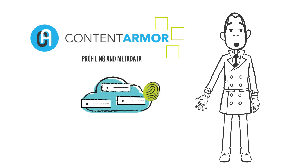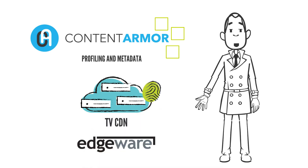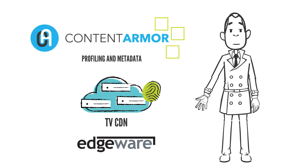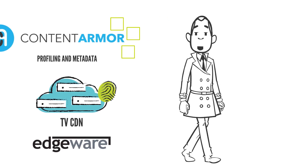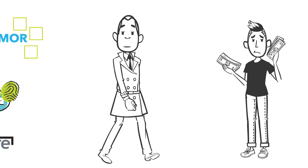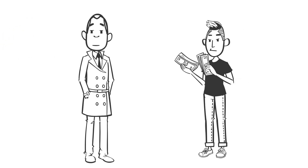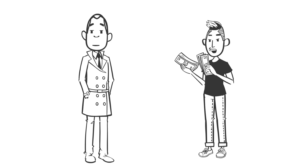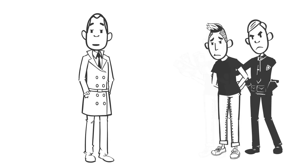Edgeware's TV CDN uses the metadata to embed a unique watermark for each stream on the fly and correlates the watermark with the viewer. Now you can protect your valuable content from piracy. From now on, it's not the content owners who need to be worried about TV piracy — it's the content thieves.